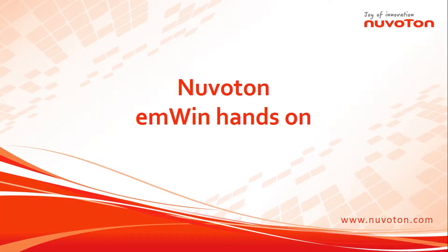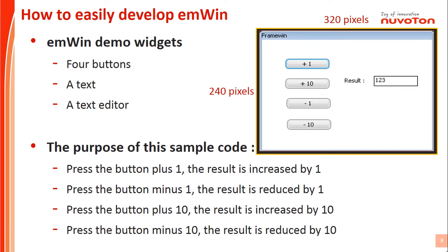We are going to show you the development of a simple EMWIN project. The purpose of this example code is to teach you how to easily develop an EMWIN project. We need to use the GUI Builder tool to create four buttons, a text, and a text editor in a window. The goal is that when you press the plus 1 icon, the result is increased by 1. When you press the minus 100 icon, the result is reduced by 100.